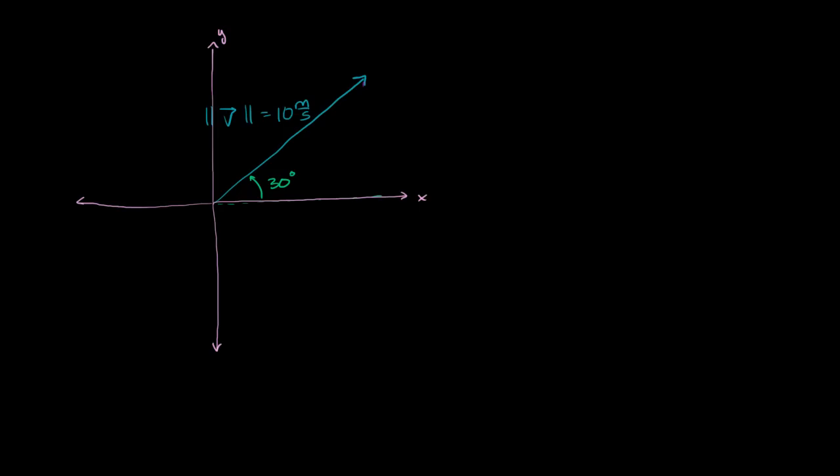What I want to do in this video is show you a way to represent a vector by its components. This is sometimes called engineering notation for vectors. It's super useful because it allows us to keep track of the components of the vector, and it makes it a little bit more tangible when we talk about the individual components.